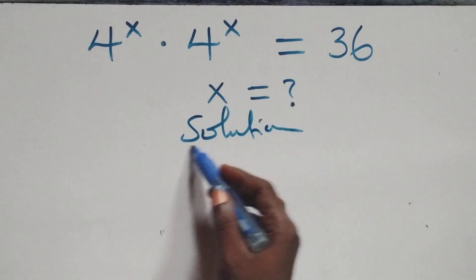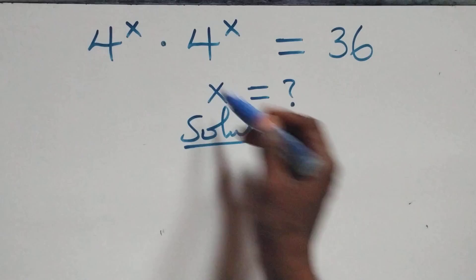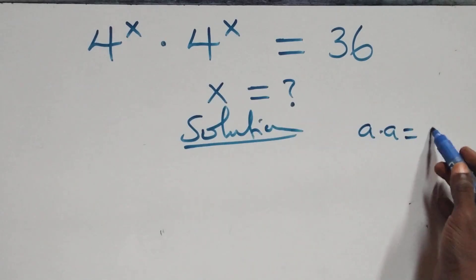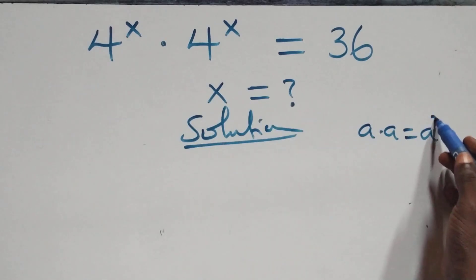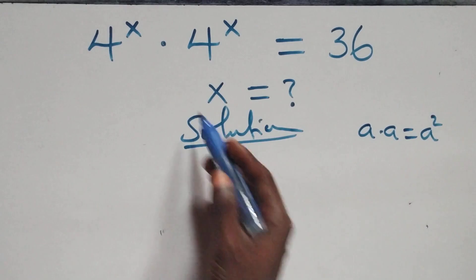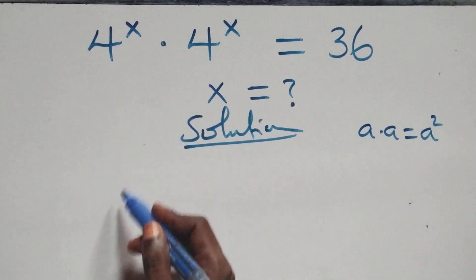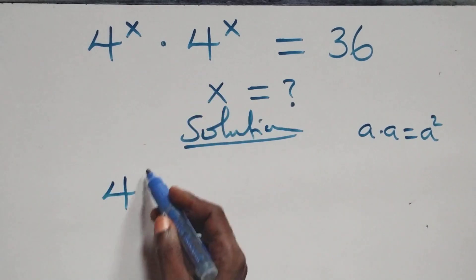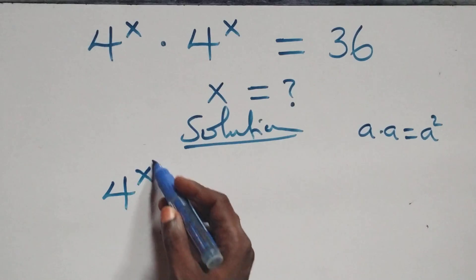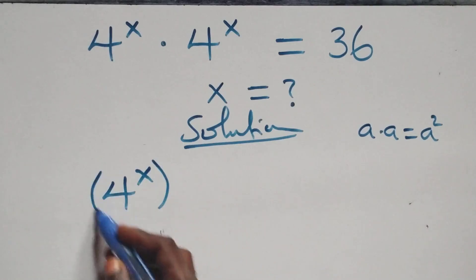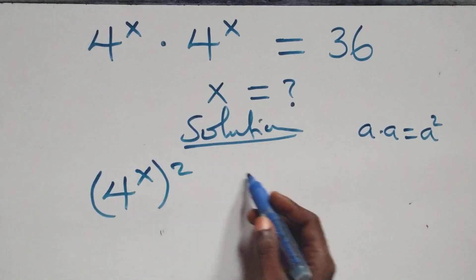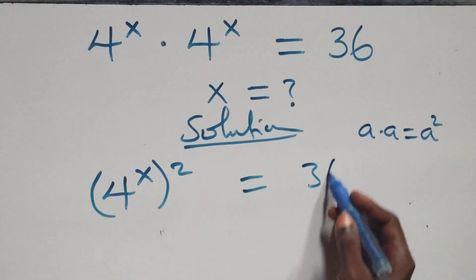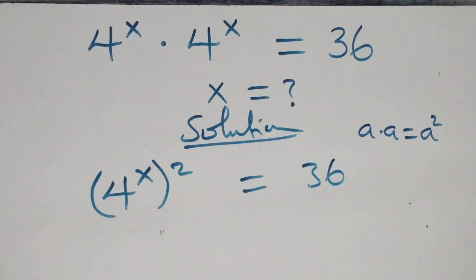What we have here: this follows when we have a times a, which is the same thing as a squared. With the same thing multiplying, we can write it as 4 raised to power x, squared, equals 36 on this side.